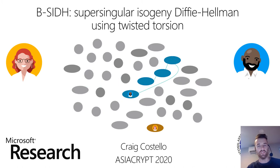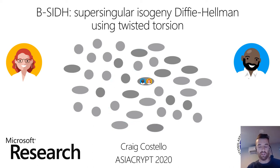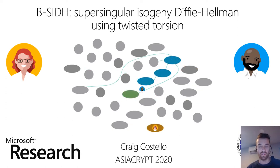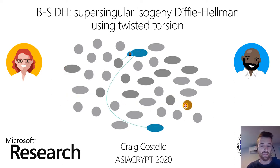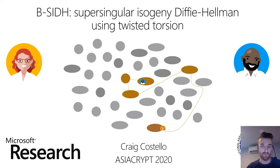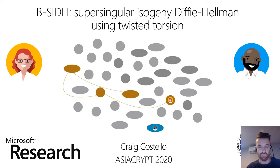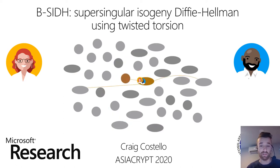B-side is an idea that I stumbled across completely by accident. A little over a year ago, I was writing a tutorial on SIDH and was trying to use Magma to produce a toy example — the toy example that corresponds to the GIF on the title slide. In using Magma to derive this toy example, I stumbled across something that was really confusing to me. I thought it was a bug in Magma. But once I realized what was going on, what I thought was a bug gave birth to the idea that ended up being B-side.